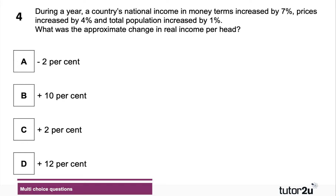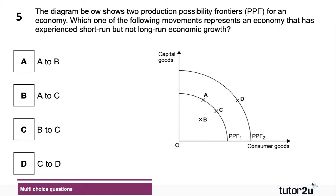Question four: during a year, a country's national income in money terms increased by 7%, prices increased by 4%, and the total population increased by 1%. What was the approximate change in real income per head? Real means adjusted for prices, and per head means adjusted for population change. 7% money increase in GDP minus 4% inflation gives plus 3%, minus 1% population growth gives approximately plus 2% — real income per head increased.